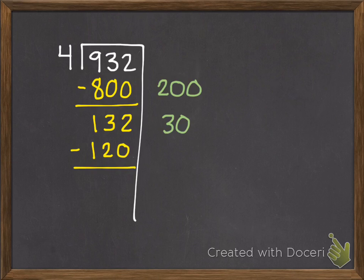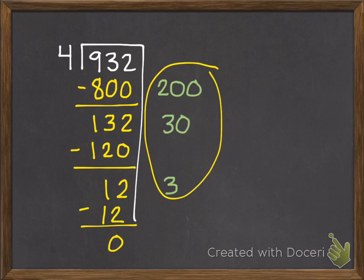Now I have just 12 left. So I know I can take out 3 fours. 3 fours is 12, leaves me nothing left. Add up my partial quotients and I get a quotient of 233.